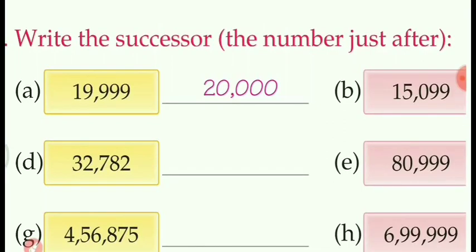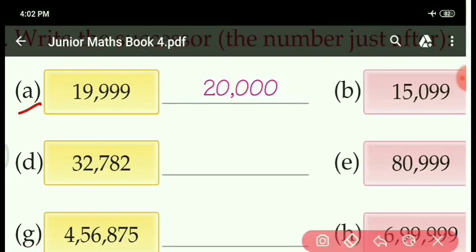Let us see part A: 19,999. Next successor number — plus 1. Nine plus one is ten, carry one. Nine plus one is ten, carry one again. Nine plus one is ten, carry again. Nine plus one is ten, carry again. And one plus one is two. Required next number: 20,000.